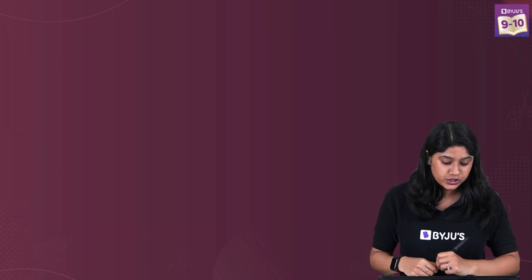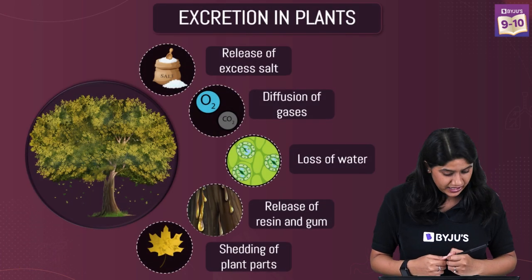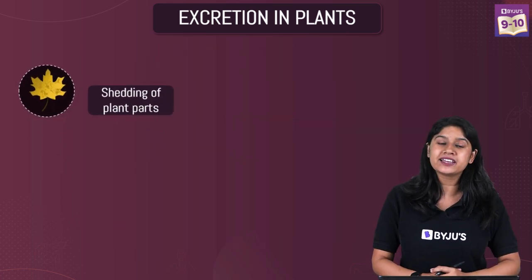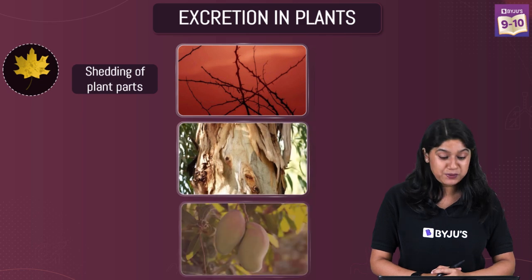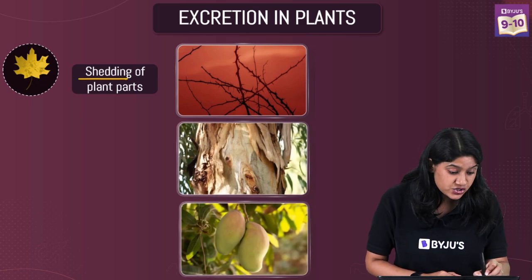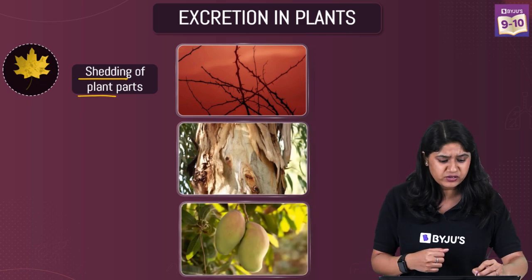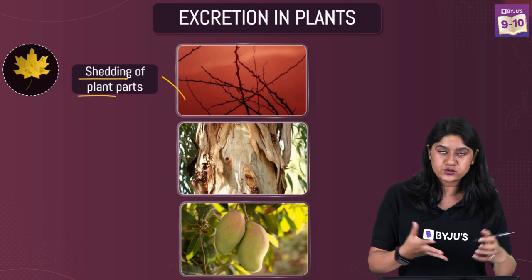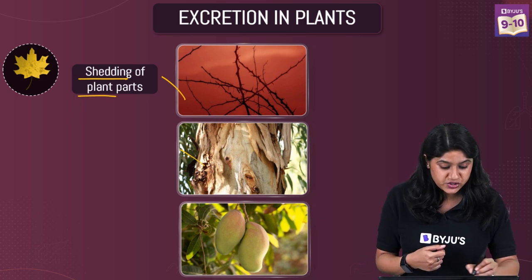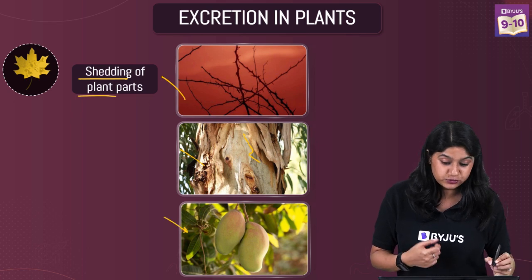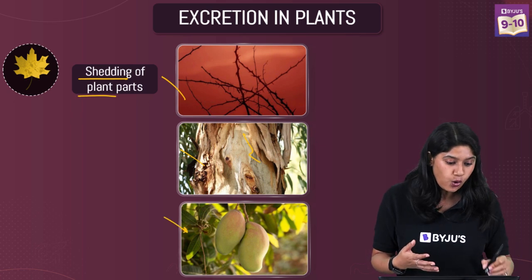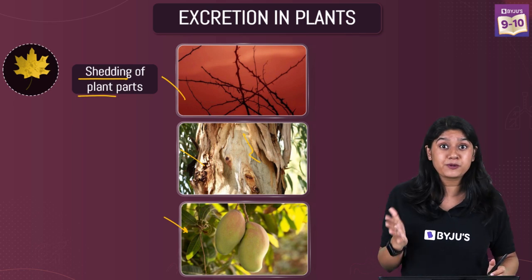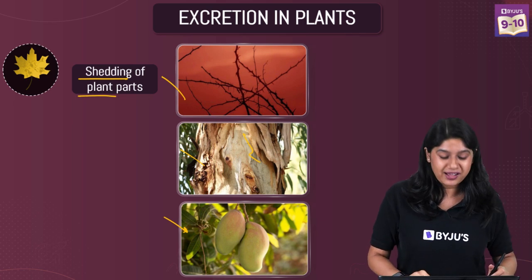Moving ahead to the next type: shedding of plant parts. This is one of the common things we usually see in plants. We see the shedding of leaves, which is really very common, the shedding of bark, and the shedding of fruits. When a tree or plant sheds its parts, this is also a type of excretion happening in plants.